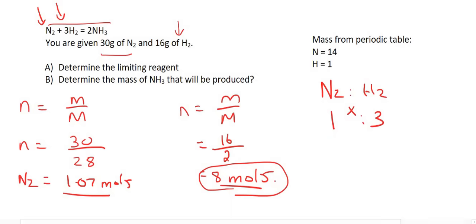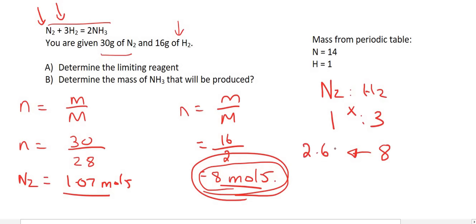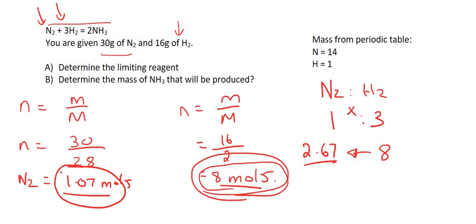Let's verify the other way: if we use all 8 moles of hydrogen and divide by 3, we'd need 2.67 moles of nitrogen. We only have 1.07 — not enough. Either way, nitrogen is limiting and hydrogen is in excess. For the rest of the question, use the limiting reagent — nitrogen.